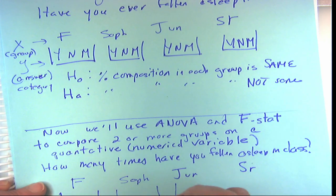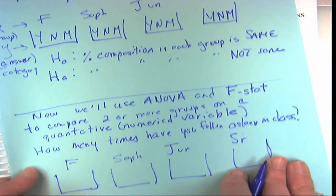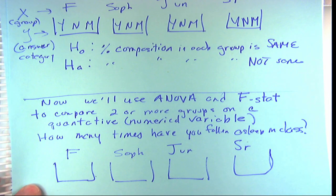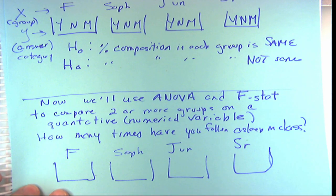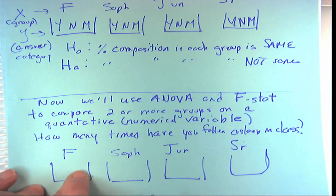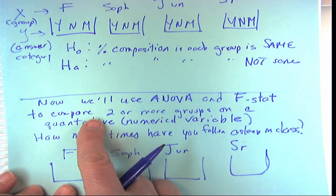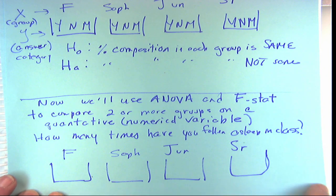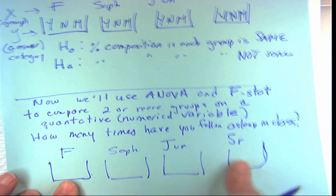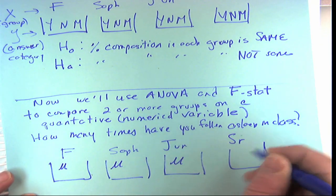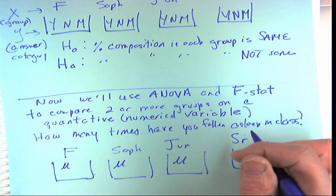Instead of asking 'Have you fallen asleep: yes, no, maybe?', we ask 'How many times have you fallen asleep in class?' We'd still have the freshmen, sophomore, junior, and senior boxes representing the populations, drawing random samples. Inside each box is a mean mu — the population mean for that group.